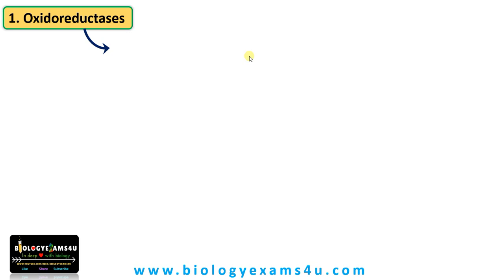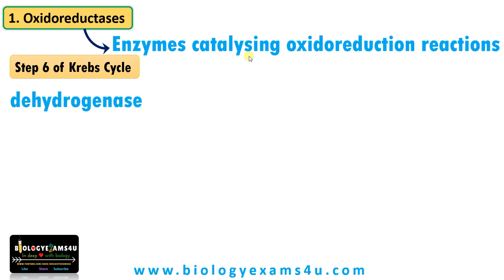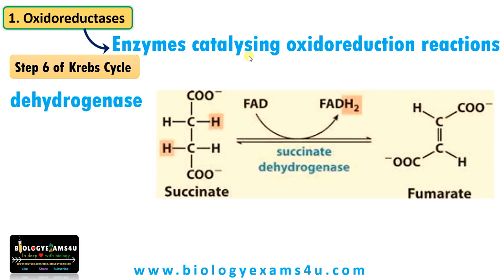As the term suggests, these enzymes are involved in catalyzing oxidation-reduction reactions. Let's take an example: step 6 of the Krebs cycle, where a dehydrogenase enzyme is involved. The enzyme is succinate dehydrogenase, which catalyzes the oxidation of succinate to fumarate. So succinate is oxidized to form fumarate. As you see, the hydrogen is donated by succinate, so it becomes oxidized.